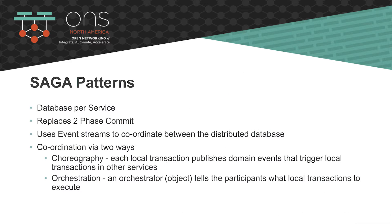The Saga pattern is a very important pattern — it basically replaces a two-phase commit. Let's assume there are three or four components participating in a transaction. Each component executes and says 'I have executed successfully.' Once all components confirm success, then only the transaction is set as executed. There are two ways to do this: one is via choreography and another one is via orchestration. With that, I'll hand over the mic to Prakash, who is going to cover stateless, state management, and other information.